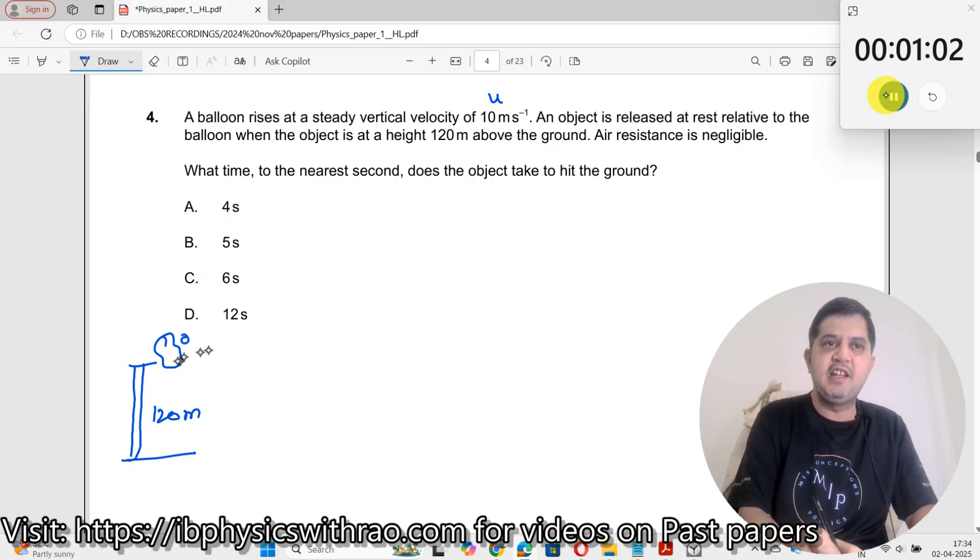Air resistance is negligible. So while it is being released, the balloon is moving with an initial velocity of 10 meters per second. The moment it's released, what happens to this particle? The particle takes up this speed, and then the acceleration is equal to g.